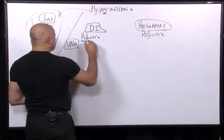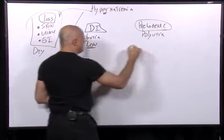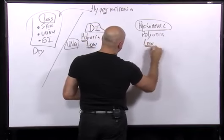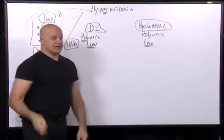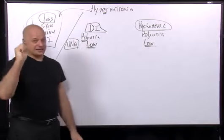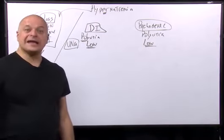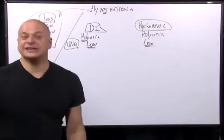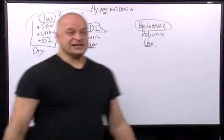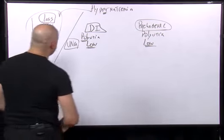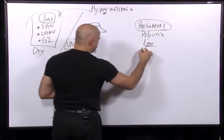They both do. They both have a low urine sodium. If you can find someone who's urinating all the time with a high urine sodium, you should report it in the Bible, because it would be a miracle. It's a low urine sodium — low means less than 20.